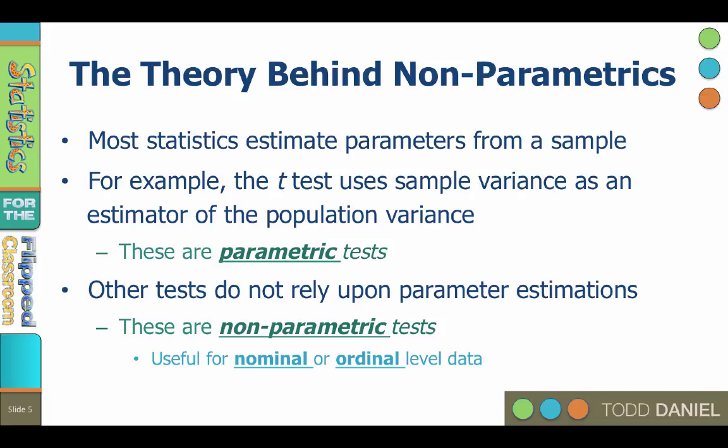Non-parametric statistics are especially useful with nominal and ordinal level data, although they can be used with interval and ratio level data as well. For example, you want to make a comparison about whether males or females are more likely to help a person in either emotional distress or physical peril. Or perhaps you want to know if patterns of soft drink consumption are the same at a state university as at a private school. Maybe you want to know if certain dormitories are overrepresented or underrepresented in their number of student government representatives.